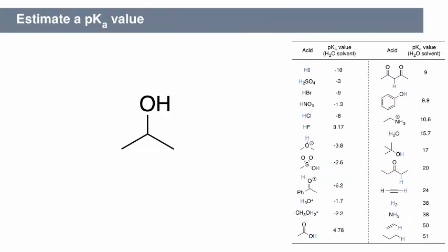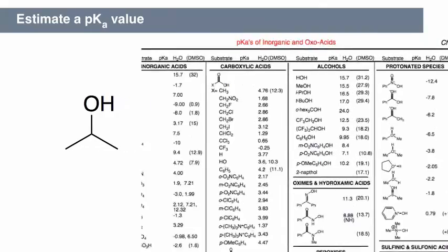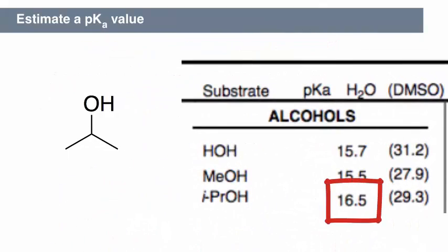We can find the exact pKa value of isopropanol in a more detailed table, such as Evans' pKa table. The value is 16.5. The pKa values of aliphatic alcohols typically fall between 15 and 18.